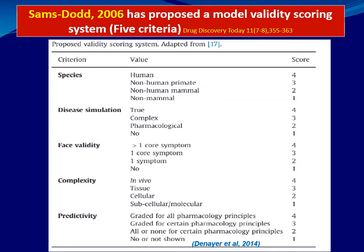SAMS (2006) proposed a model validity scoring system with five criteria to help assemble a screening cascade or combination of models with maximum validity. The first criterion is species: the closer the species to humans, the more likely its pathophysiology resembles humans, and the higher the score. Non-human primates like apes or monkeys score three, non-human mammals like rats or mice score two, and so on.